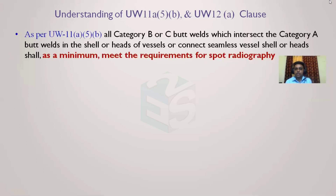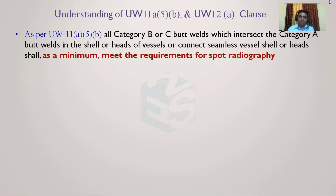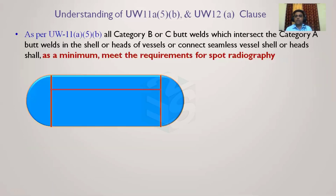UW-11a5b states that category B and C joints should satisfy spot radiography even though the clause covers full radiography. For category A and D, full radiography along the full length is considered, but for category B and C joints only spot radiography is recommended, because B and C joints are circumferential joints which have lower stress compared to longitudinal joints.